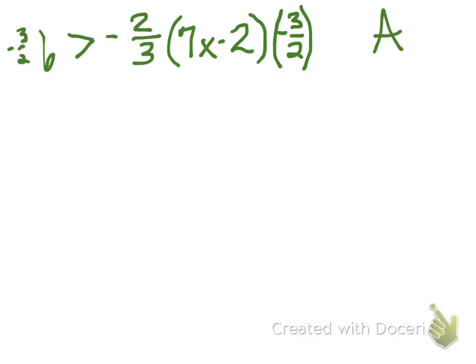And remember, the golden rule of inequalities. Right off the bat, I've multiplied both sides by a negative number. So I'm going to go ahead and flip my symbol. And now we can simplify.